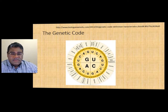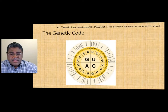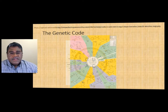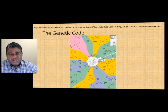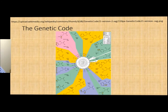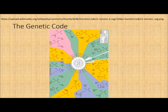Methionine, AUG, is the start codon — sometimes incorrectly called ATG. Here is another representation, slightly different but conveying the same information, which also gives you an idea of the structures of the amino acids. This is a circular representation; the earlier one was more of a matrix representation.